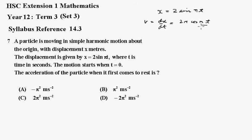So when it first comes to rest, because the cos of pi upon 2 is 0, pi t equals pi on 2. That means t must equal a half.